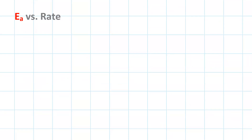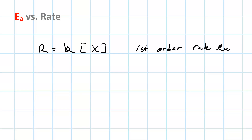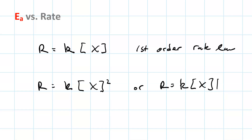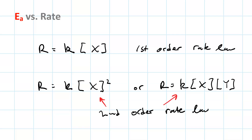The step with the greater activation energy is the rate-determining step. We have rate laws: r = k times the concentration of a reactant (first-order), or r = k times the concentration of x squared, or r = k times the concentration of x times the concentration of y — these are both second-order rate laws. You might wonder what activation energy has to do with these rate laws.